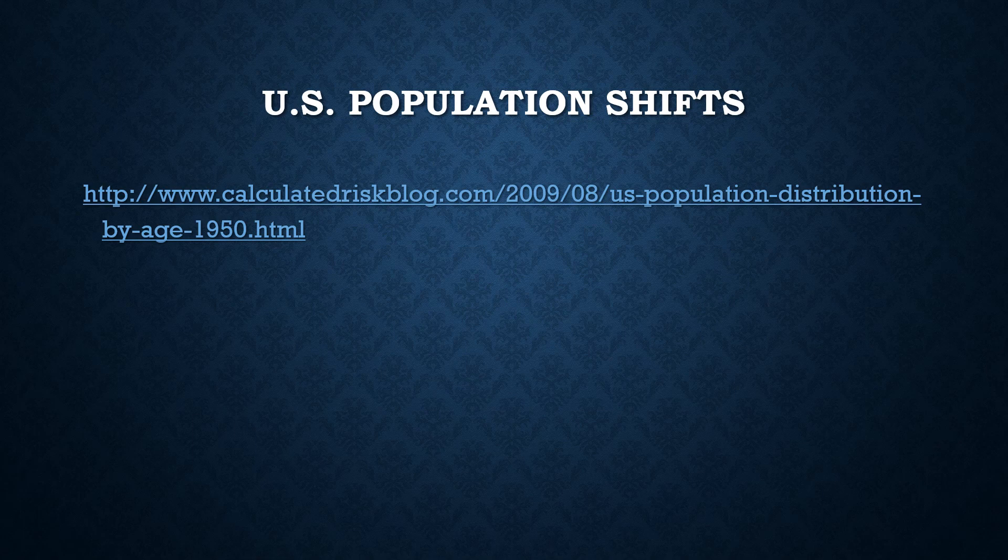If you take a look at this particular URL, it has an over-time look at the shifting U.S. population, indicating that on the average the U.S. population is getting older. You can also see those baby boomers — that large group of people born right after World War II — as they move their way through the U.S. population. And now they are becoming retirees.